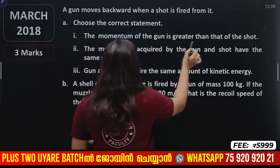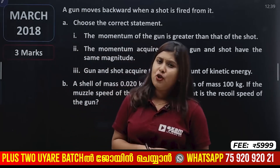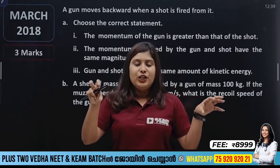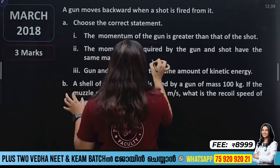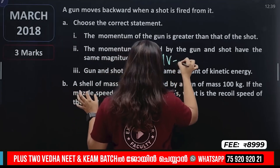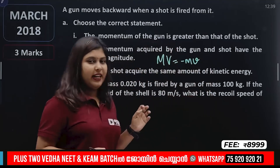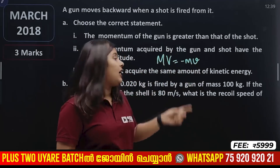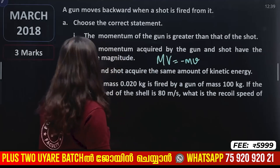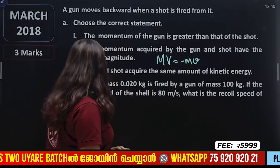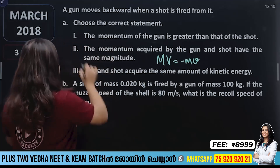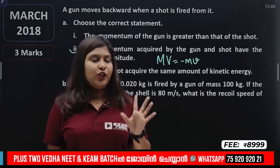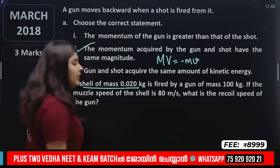Choose the correct answer: the momentum of the gun's bullet is equal and opposite to the gun's momentum. Capital M times V equals minus small m times small v. The bullet's momentum is equal in magnitude to the momentum of the gun but in the opposite direction. So we select option 2: same magnitude, opposite direction.